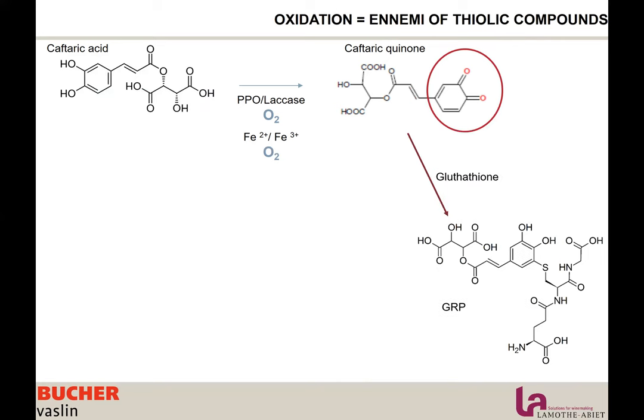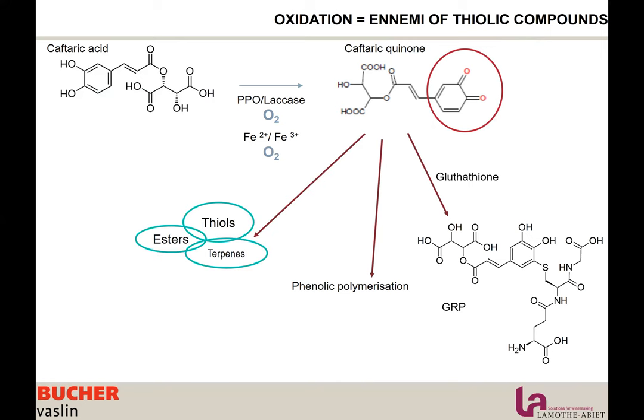The quinone is going to react first with glutathione, which acts as an antioxidant naturally present in grapes. It is very important to preserve it throughout the life of the wine. When quinone reacts with glutathione, it creates a GRP — grape reaction product — which traps the quinone and stops the oxidation reactions. Other reactions include phenolic polymerization, which produces brown pigment and causes color loss, and quinone reacting with aromas such as thiols, esters, and terpenes.